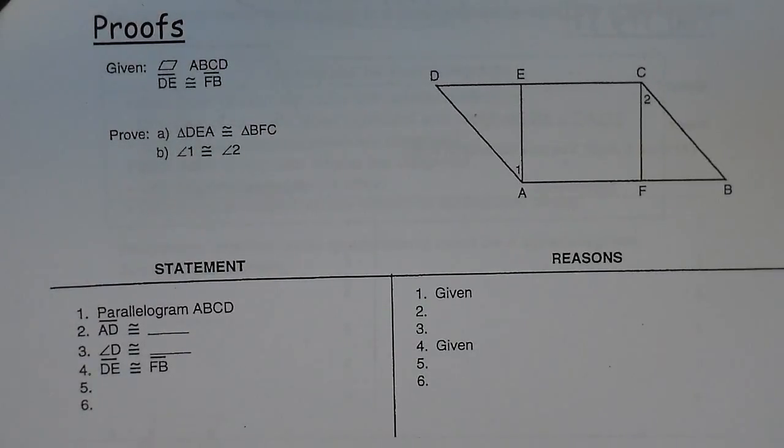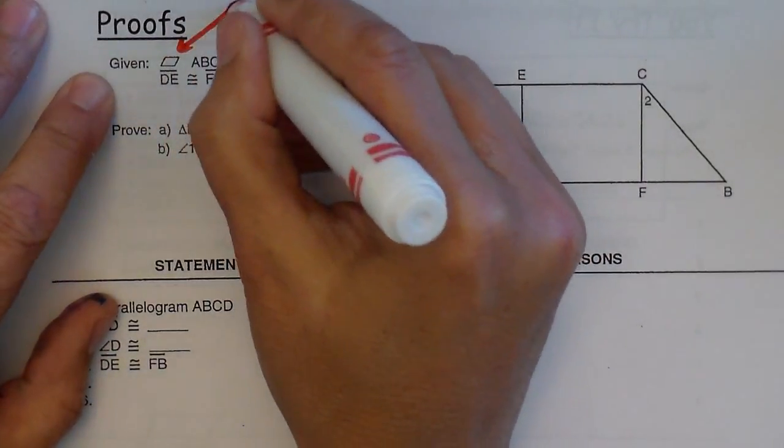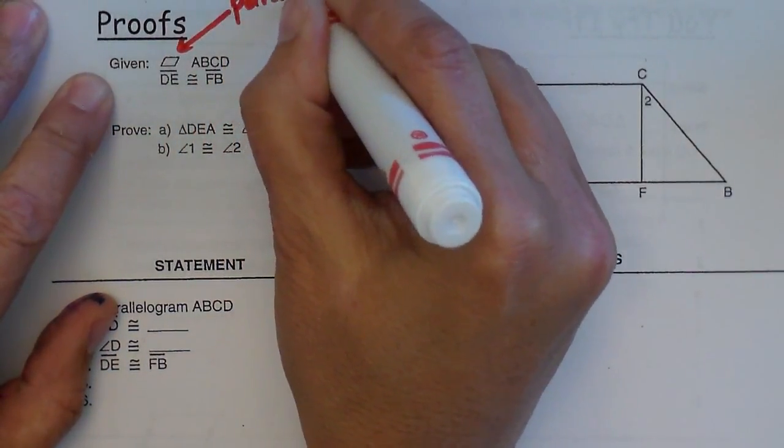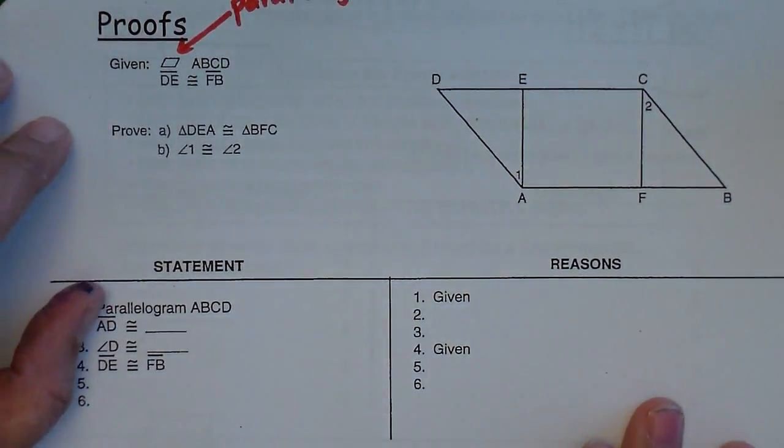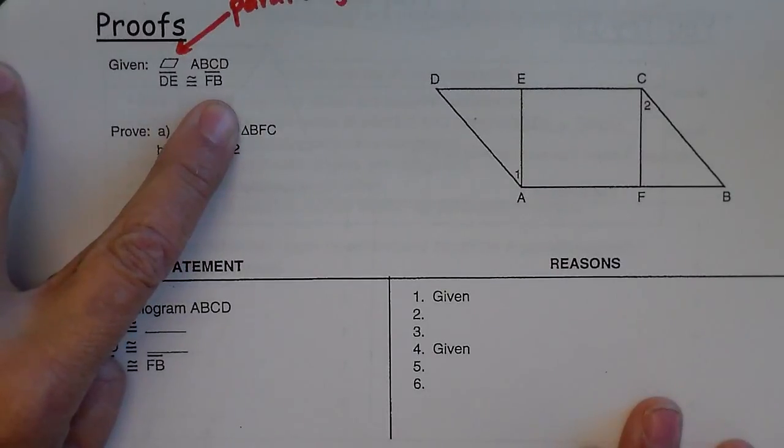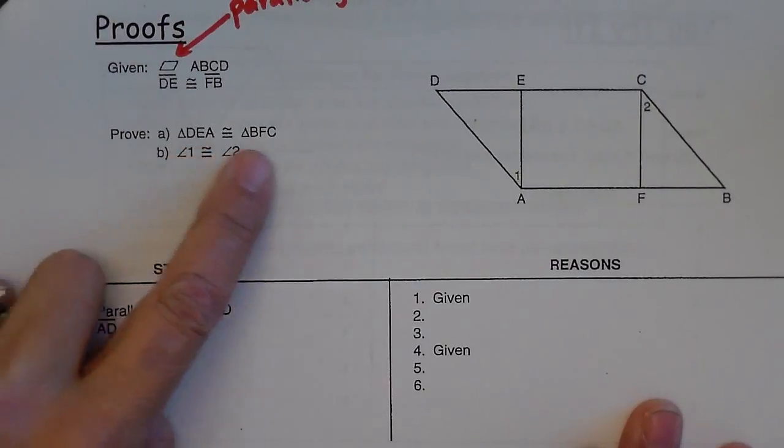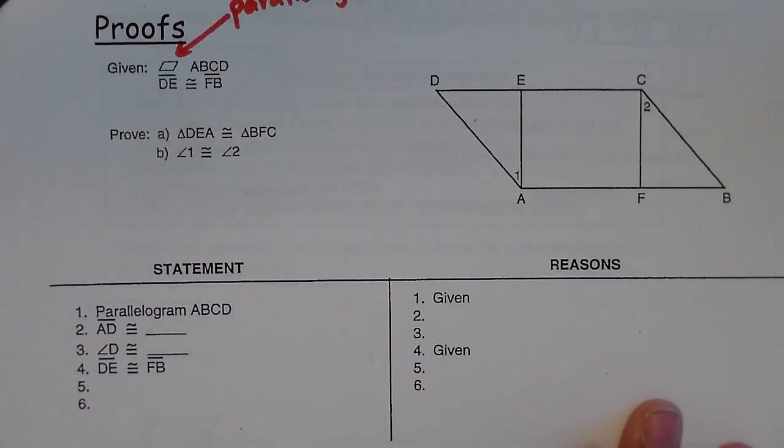Let's do a couple of proofs practicing with parallelograms. Given this little symbol right here, that means parallelogram. So given that ABCD is a parallelogram, DE is congruent to FB, prove that triangle DEA is congruent to triangle BFC and prove that angle 1 is congruent to angle 2.